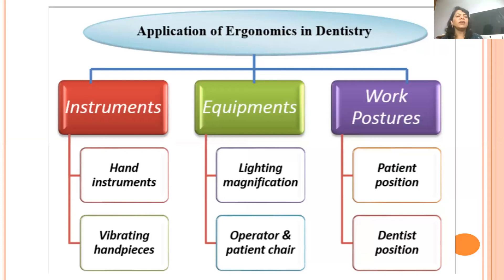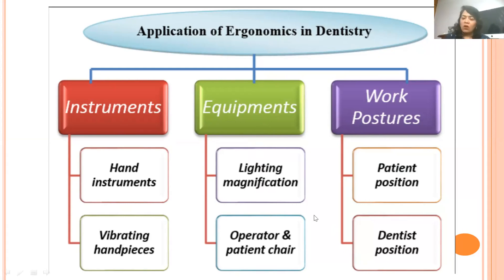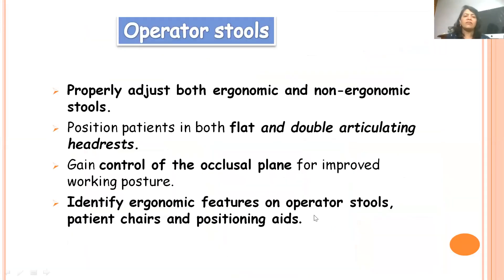That was your human element. Ergonomics is also applicable to your instruments, equipment, and patient position. In instruments, both hand and vibrating instruments are equally relevant in making a choice. For equipment, that is your lighting, good magnification, and operator and chair orientation — all are very important.